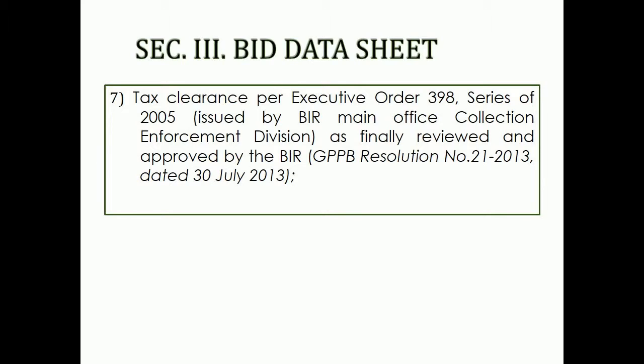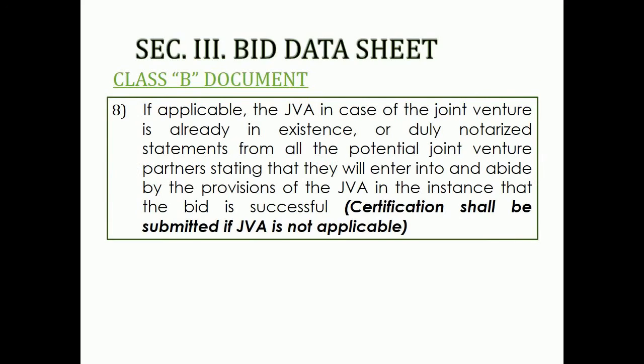7. Tax clearance per Executive Order 398, Series of 2005, as finally reviewed and approved by the BIR. 8. Class B Document. If applicable, the JVA in case the joint venture is already in existence, or duly notarized statements from all the potential joint venture partners stating that they will enter into and abide by the provisions of the JVA in the instance that the bid is successful.